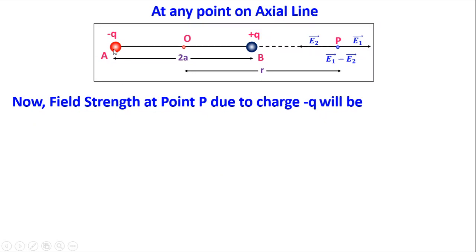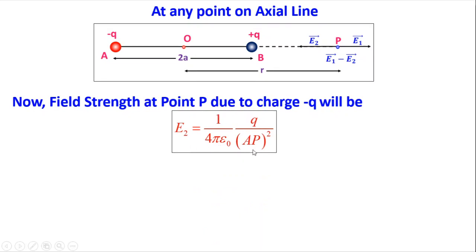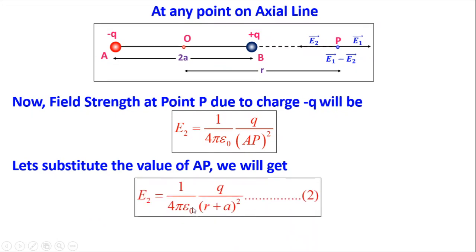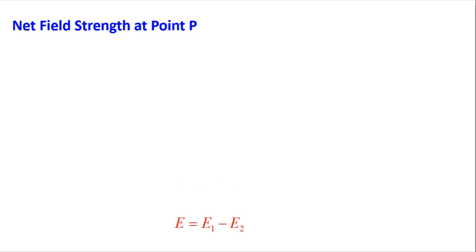Similarly, the field strength at point P due to charge minus q, let it be E2. E2 = (1/4πε₀) × q / (AP)². Substituting AP = r + a, we get E2 = (1/4πε₀) × q / (r + a)². E2 is directed from P towards A (left direction). The total field E = E1 − E2.